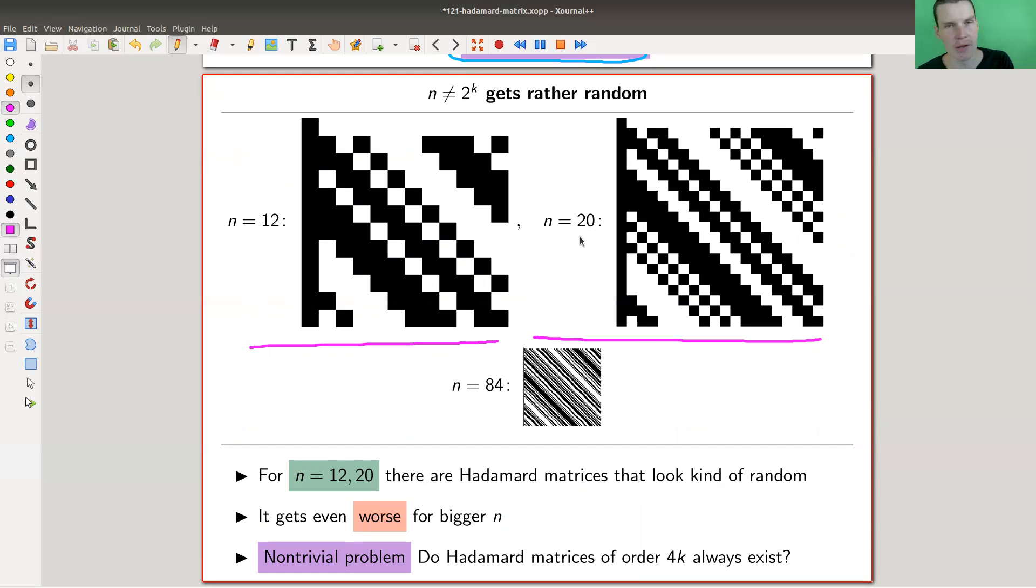Here's an example for n equals 12 and an example for n equals 20. So 20 is not a power of 2. 84 is not a power of 2 either. They look, I wouldn't call them random, but it gets rather random actually. If n is not a power of 2, it gets rather random. I'll show you some examples in a second. There's a Mathematica demonstration linked in the description.